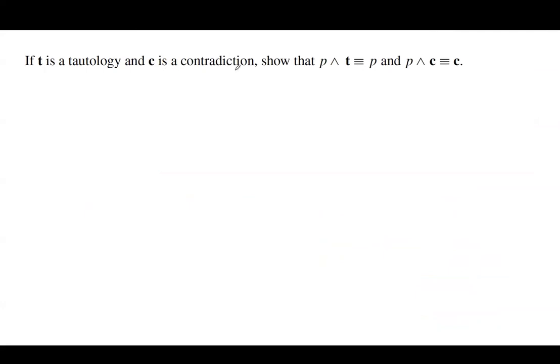If T is a tautology and C is a contradiction, we want to show that the combination of P with a tautology using AND is the same as P itself, and that the combination of P with a contradiction using AND is always a contradiction.